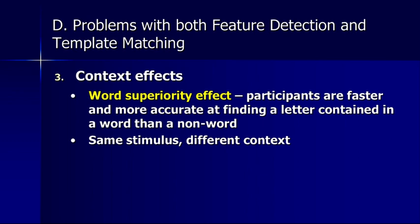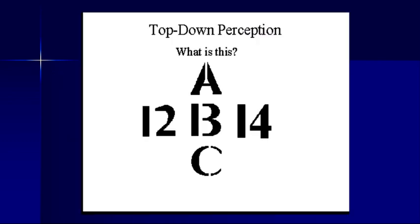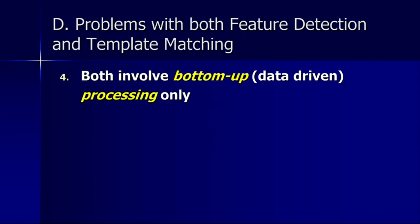We can also see other context effects in which context actually determines what we perceive. A single stimulus can be perceived differently depending on the context. In a classic example, the exact same stimulus is either the letter B or the number 13, depending on which context you might see it in.